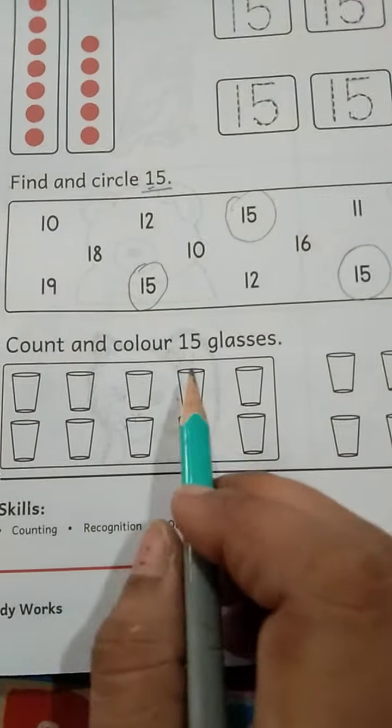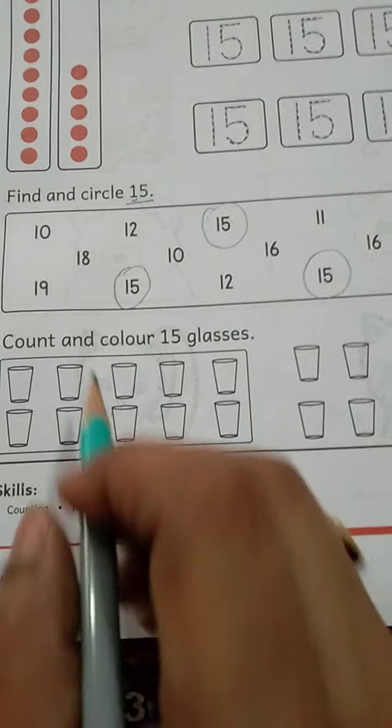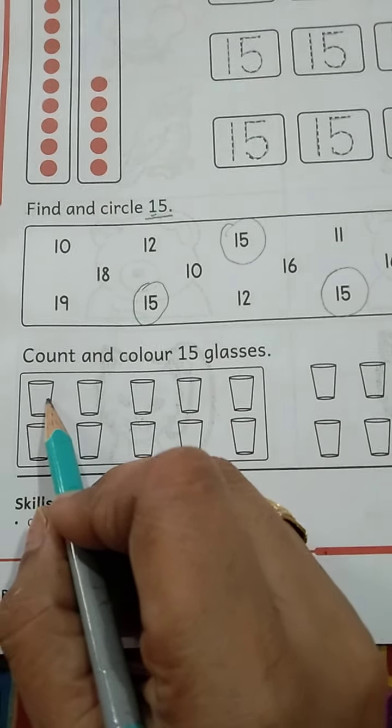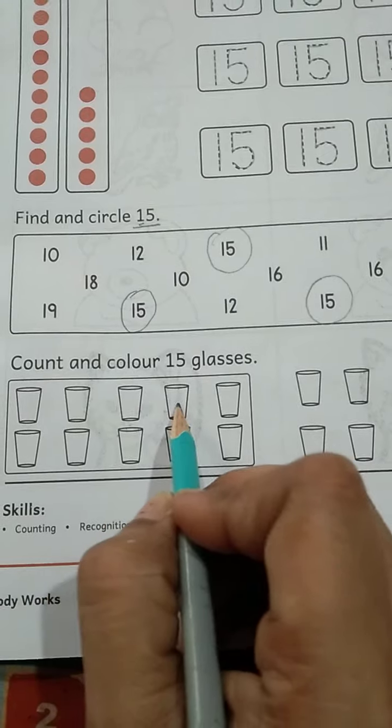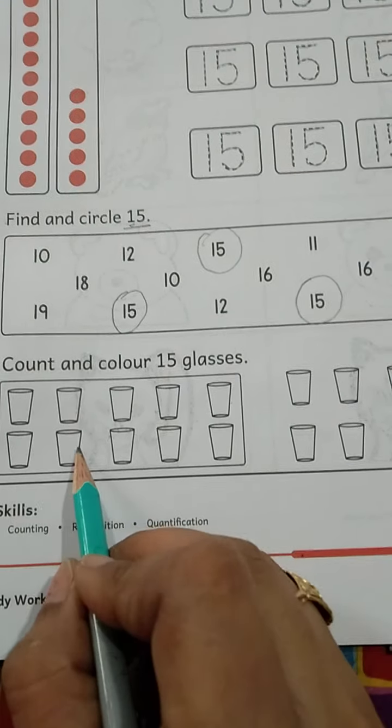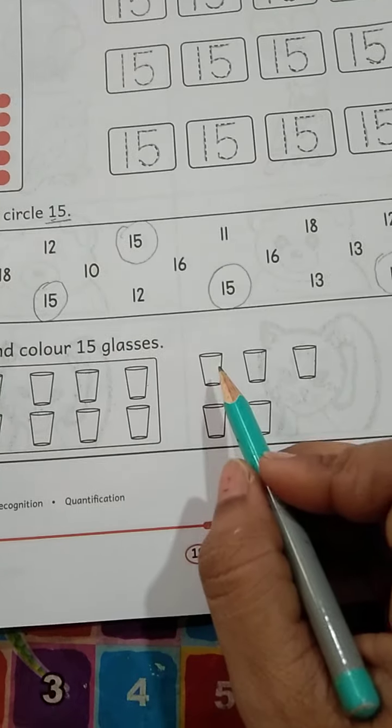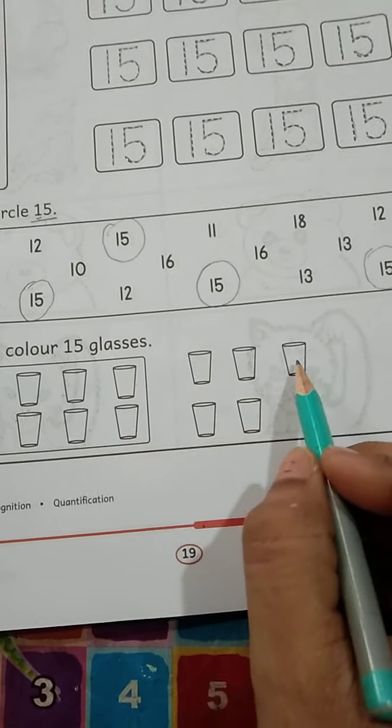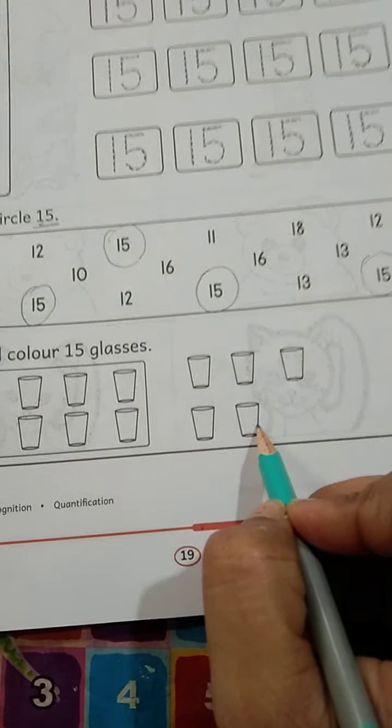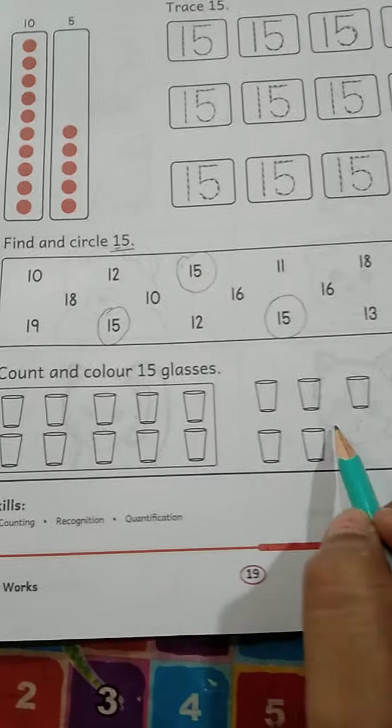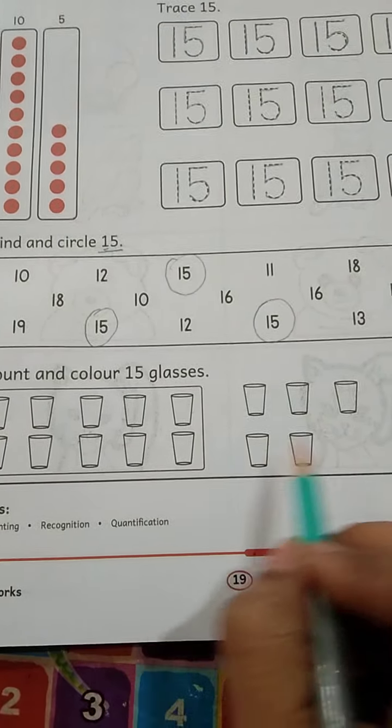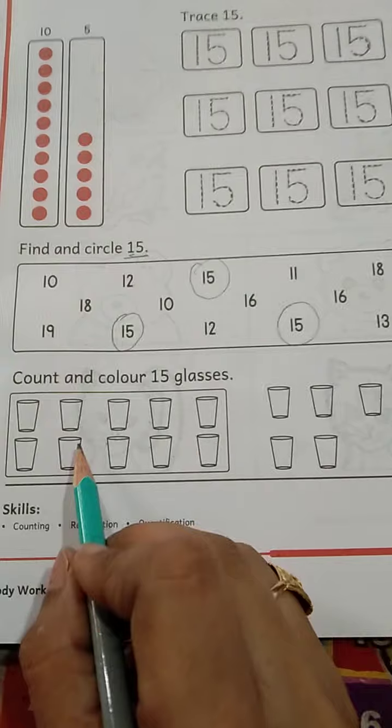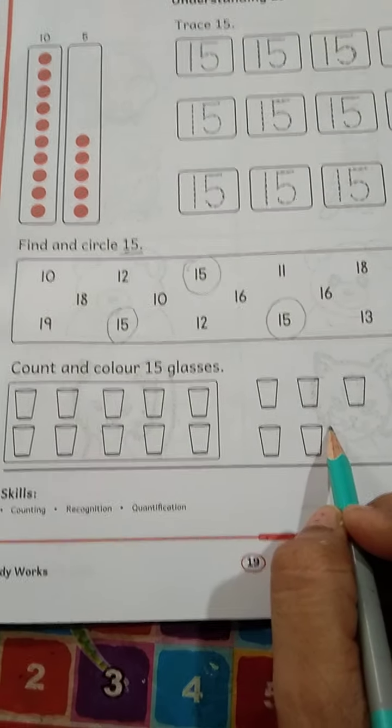Let's come to count and color 15 glasses. Let's count. How many glasses do we have? 1, 2, 3, 4, 5, 6, 7, 8, 9, 10. Then 1, 2, 3, 4, and 5 more. 10 and 5 more will be 15.